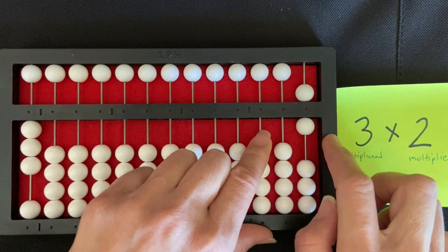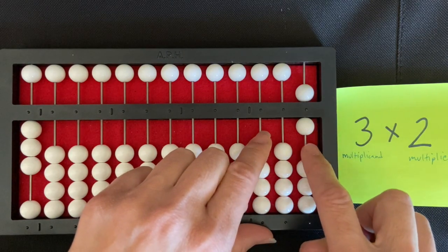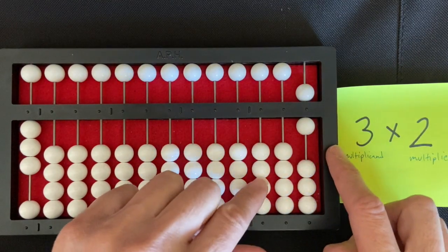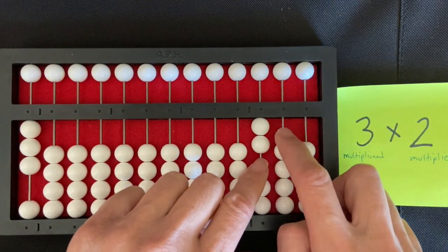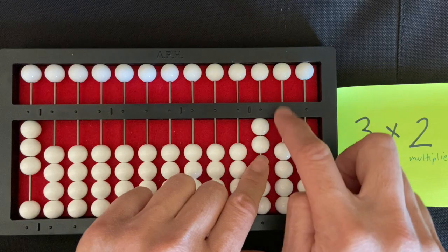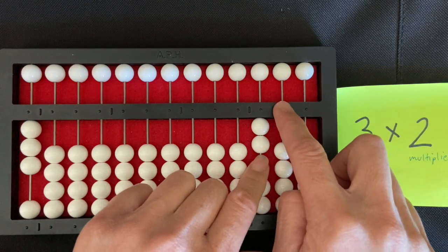So I want to show you how that could have gone wrong if we didn't say zero, six. So let's put the two for the multiplier back on. I'm going to clear this. If we did not say zero, six, we might have set the six in the tens rod.